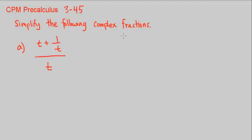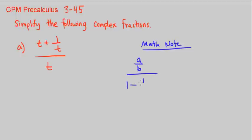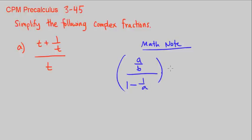So a quick math note — let's take note of the preceding math note. This is talking about simplifying complex fractions. Their example is A over B divided by 1 minus 1 over A. What they're saying to do is look at the denominators in the numerator and in the denominator, then multiply the whole thing by 1 represented as all the denominators multiplied by each other.